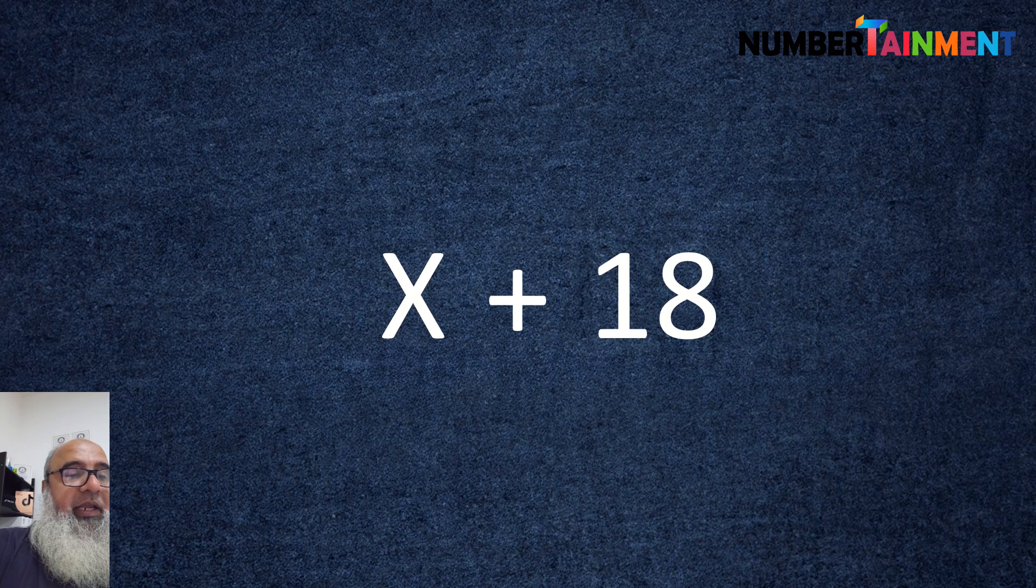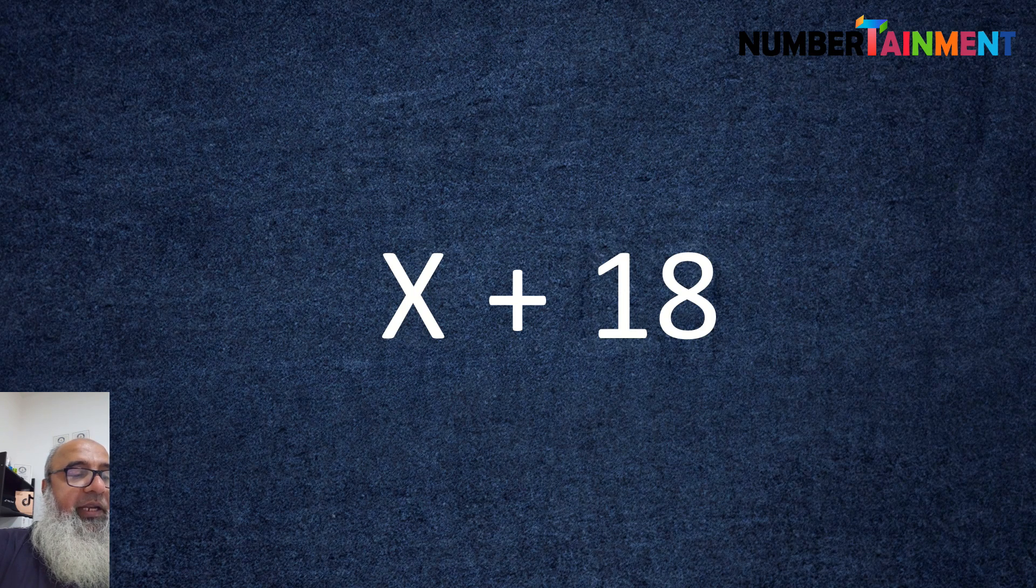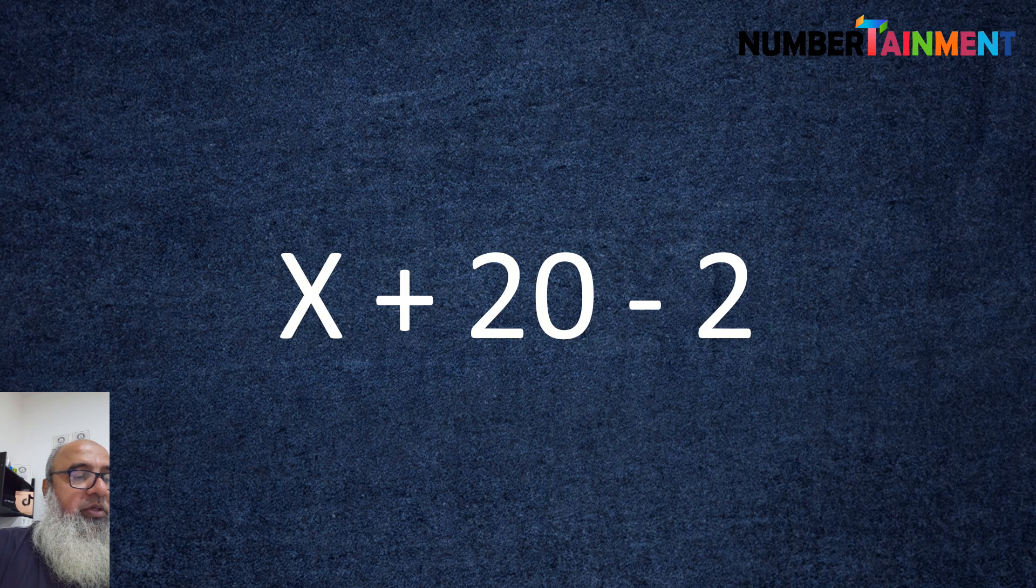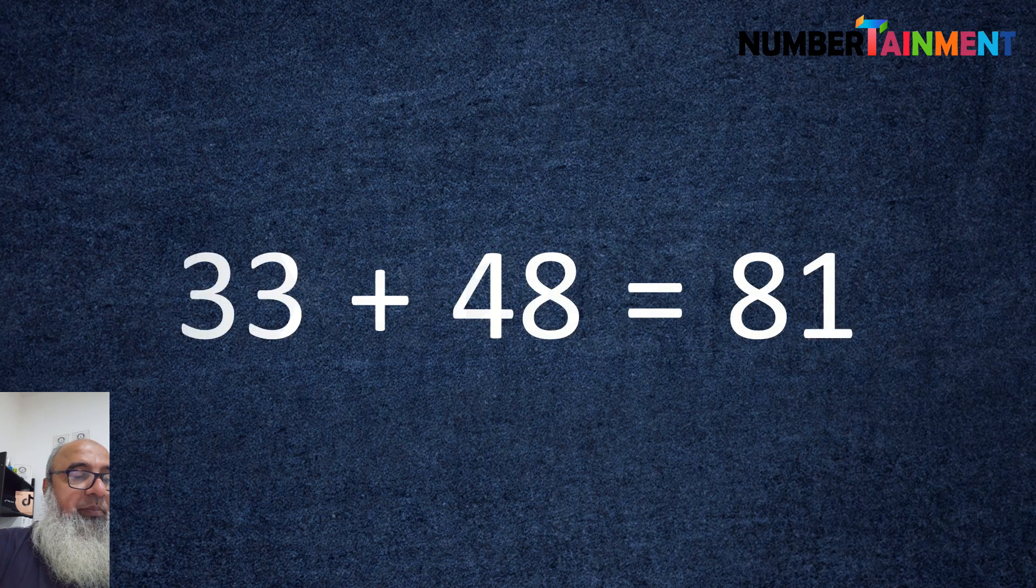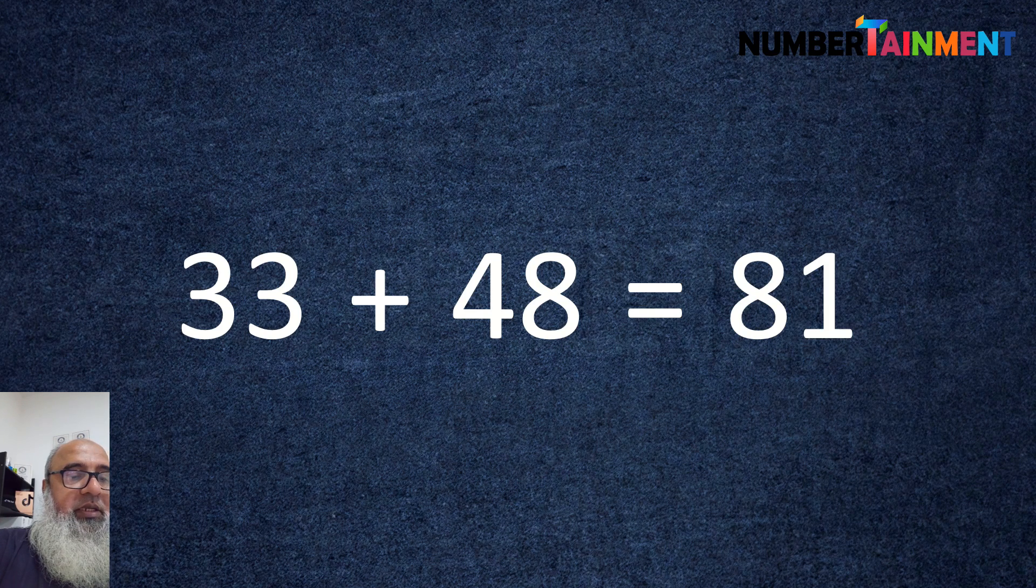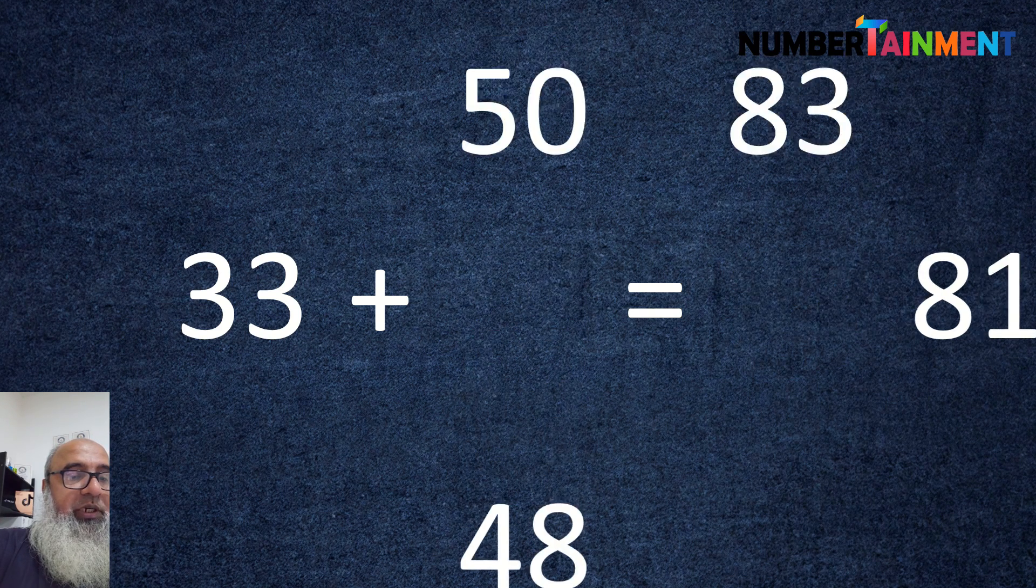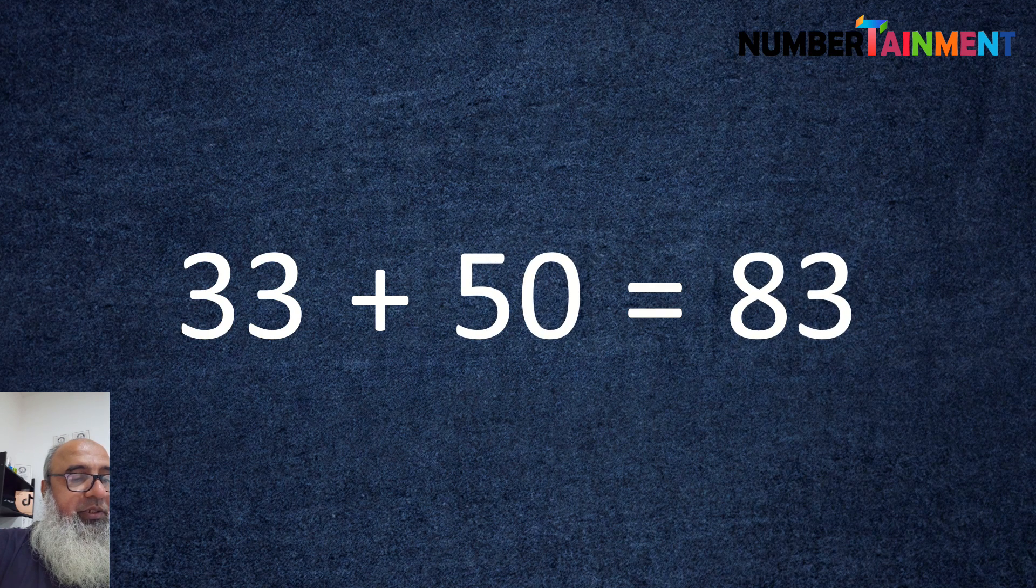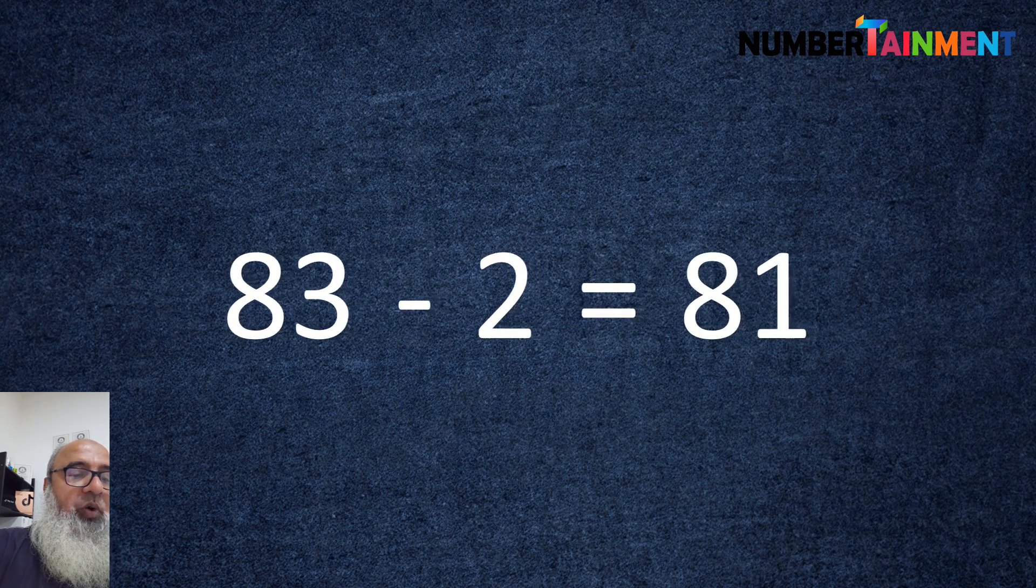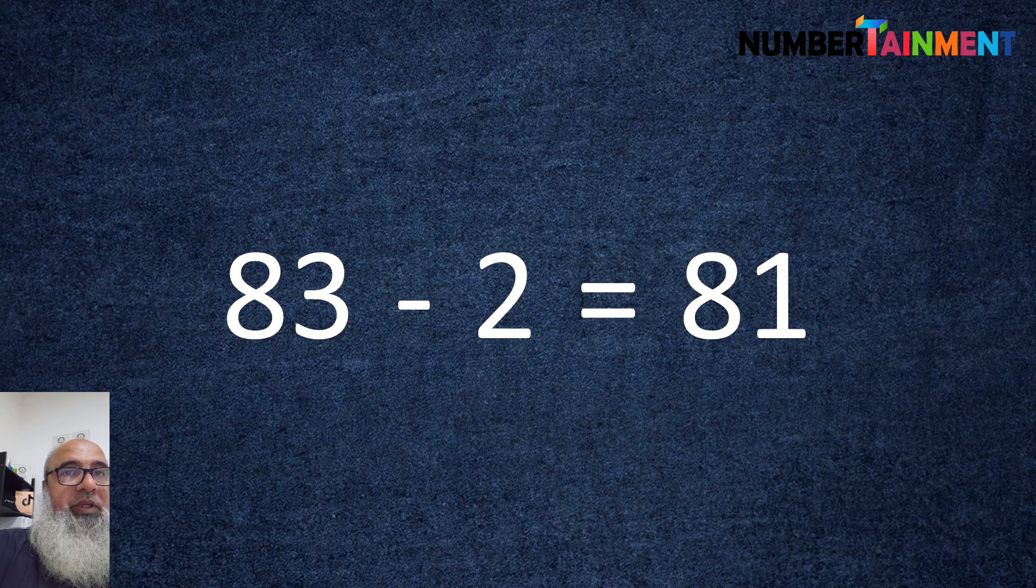we can add 18 to a number by adding 20 and taking 2 away. So for example, 33 plus 48 is equal to 81, as we will add 50 to 33 to get 83 and then take 2 away because 48 is 2 below 50.